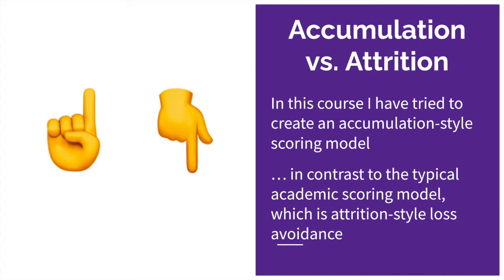In this course, I've tried to create an accumulation-style scoring model where your score is always going up visibly when you check the grade center, and it's always possible to earn more points. Even if you make a mistake, miss something, or fall behind, it's pretty straightforward to just try again and keep building that score up. This is in contrast to the traditional academic scoring model — the 0-to-100 scale — which is, unfortunately, an attrition model. If there is a predefined maximum score of 100 possible in a class, and the only way to get there is to avoid mistakes, turn everything in, and perform perfectly all the way through, that's attrition scoring.